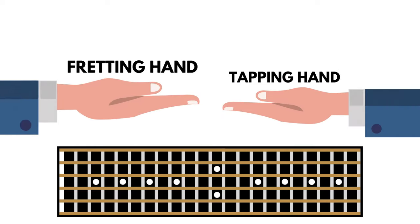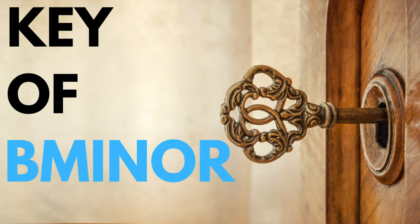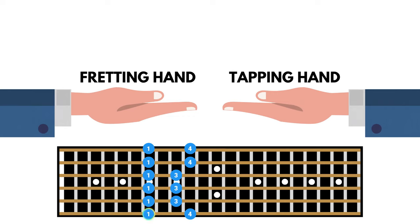First of all, let's establish the role of each hand. So our fretting hand will be using the notes of the minor pentatonic scale, position 1, and for the purpose of this lesson, I'm going to stick to the key of B minor. So that's on the 7th fret of the low E string, which is a B root note. And for our tapping hand, let's skip over position 2 and focus on position 3, to create more distance between the intervals we're going to be playing.